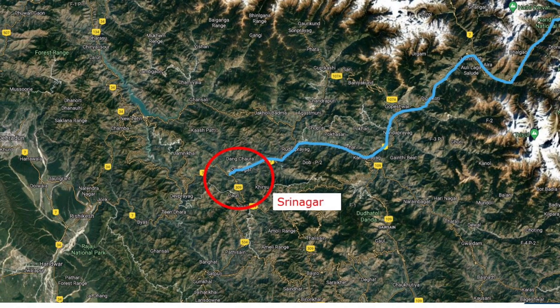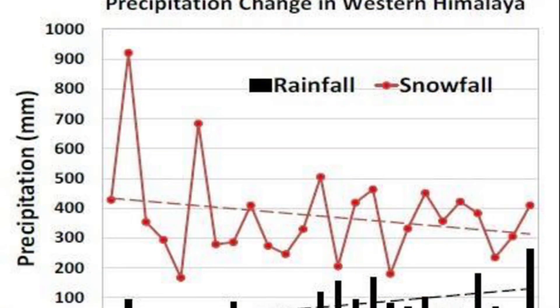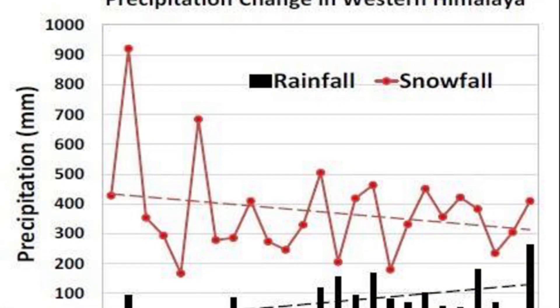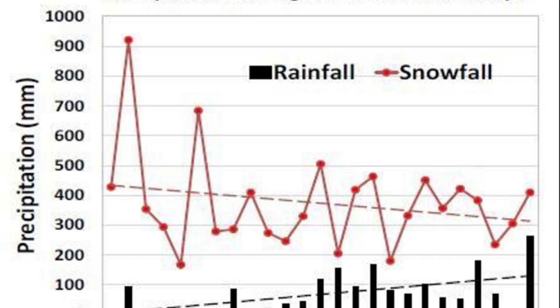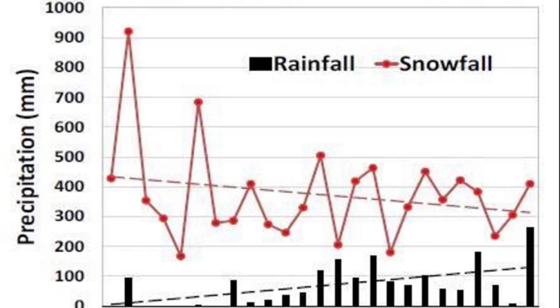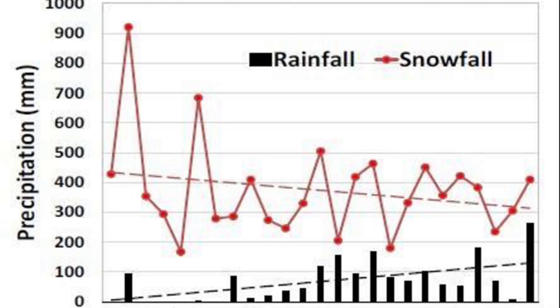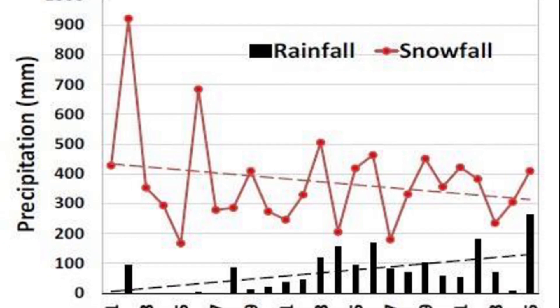Looking at rainfall and snow in the region, it is possible to see that less snow is falling and more rain is falling. This may lead to glacier melting and breaking off into rivers.